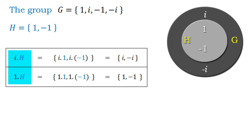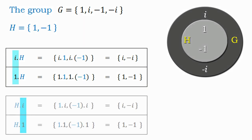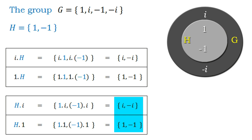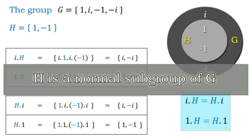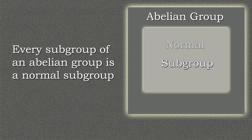They are left cosets because we multiplied i and 1 to the left of H. Multiplying to the right gives the right cosets of H in G. Comparing the elements, we find the left and right cosets coincide. So by the definition of normal subgroup, H is a normal subgroup of G. These two examples lead us to the famous result: every subgroup of an abelian group is a normal subgroup.